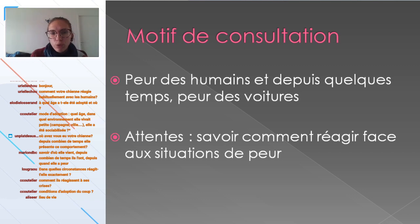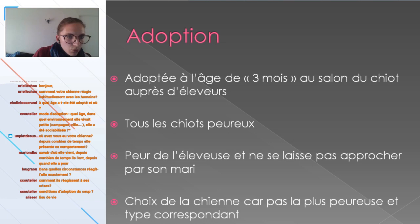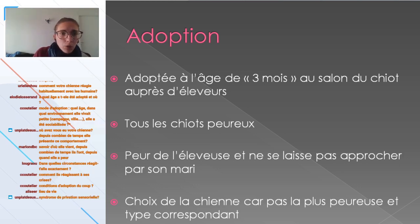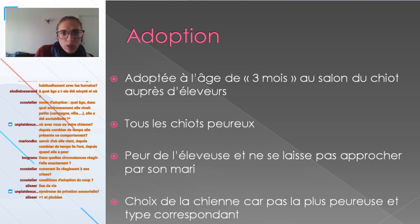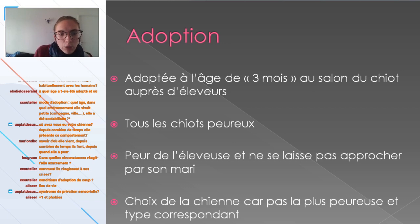On va demander le mode d'adoption. Elle a été adoptée à l'âge de trois mois, au salon du chiot auprès d'éleveurs. Tous les chiots de la portée étaient très peureux, terrorisés par l'éleveur homme qui ne pouvait pas les approcher. La dame éleveuse avait tendance à leur crier dessus. Le futur propriétaire s'était aperçu que c'était des chiots peureux, mais a quand même choisi cette chienne parce que ce n'était pas la plus peureuse, et que le format et la couleur lui plaisaient.